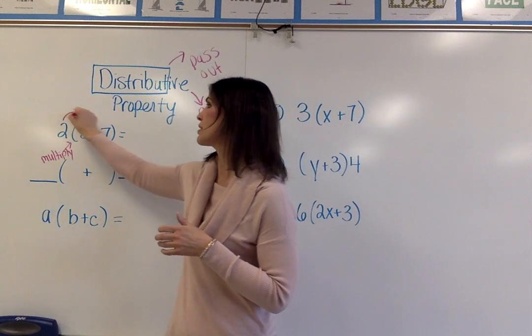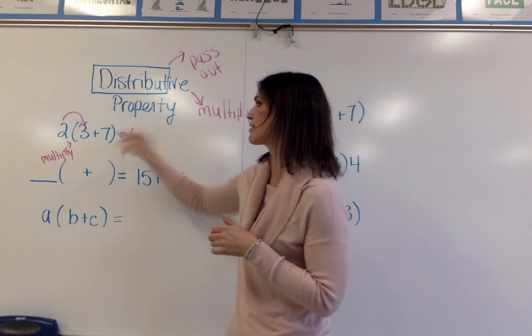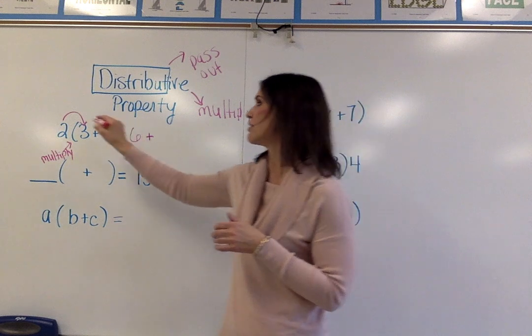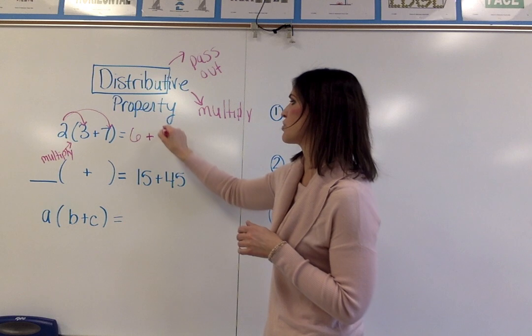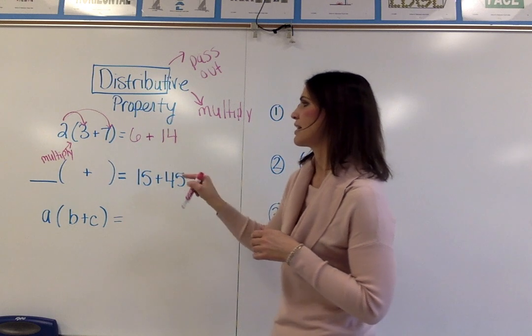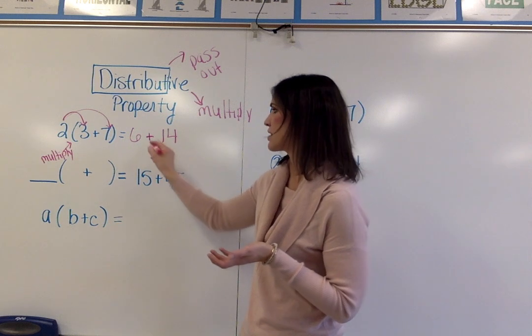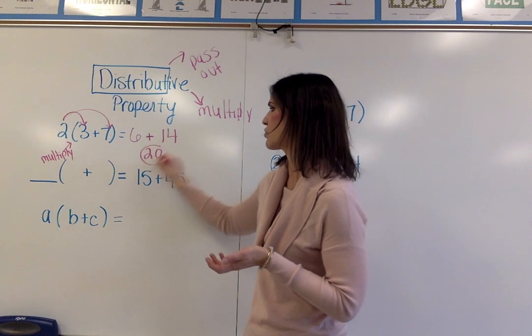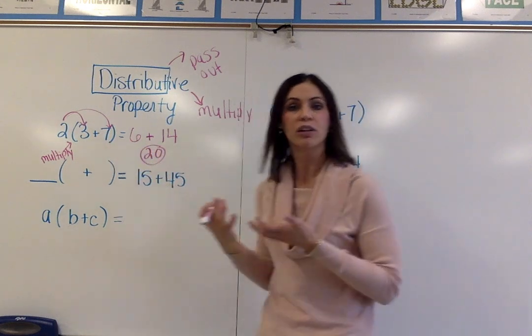So I am going to multiply 2 times 3, which is 6. Then I am going to put my addition sign. And then I also have to multiply 2 times 7, which is 14. And then I can simplify this expression if I want. And then 6 plus 14 would end up being 20. So these are equivalent expressions. They look different, but they have the same value.